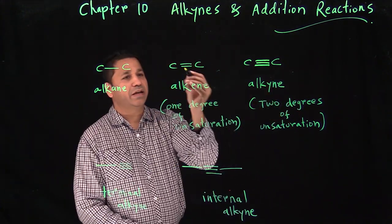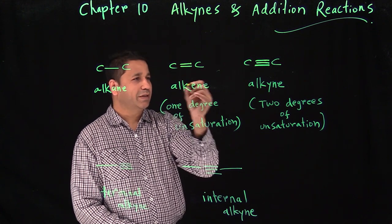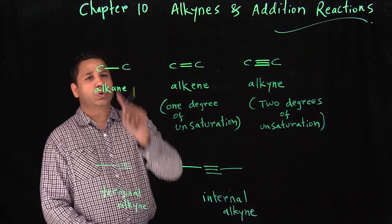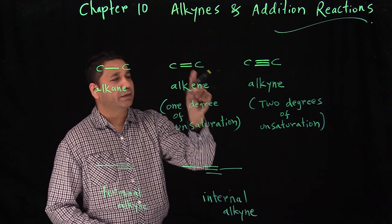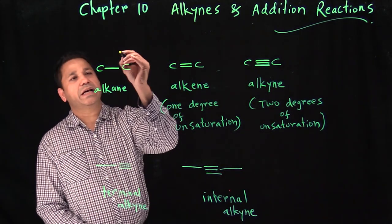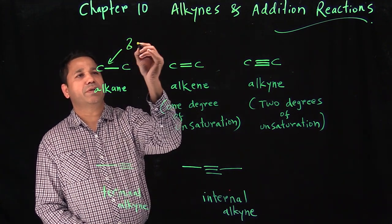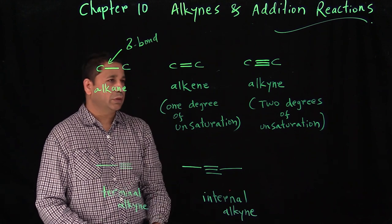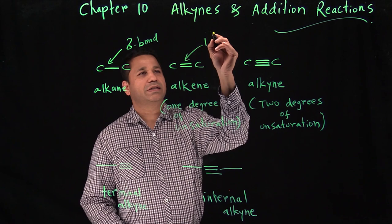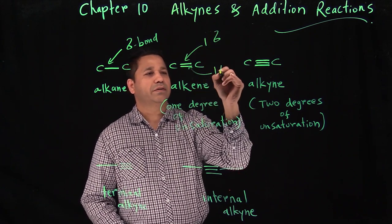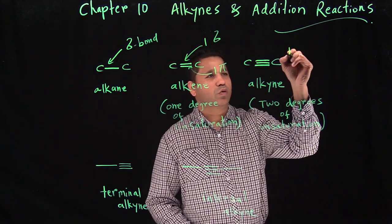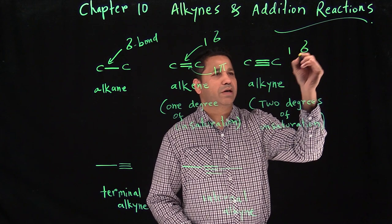Compared to an alkene, which has one double bond, an alkyne has two pi bonds. An alkene has one sigma bond and one pi bond, while an alkyne has one sigma bond and two pi bonds.